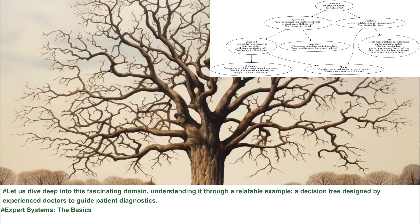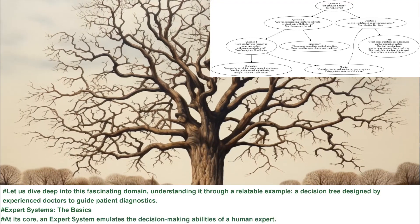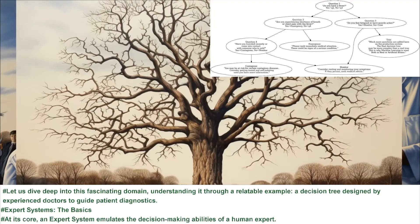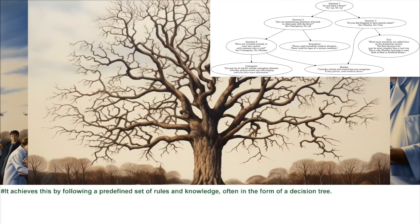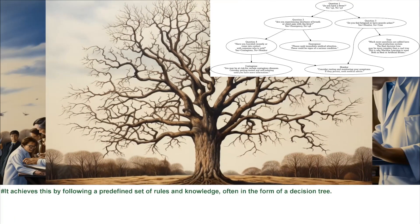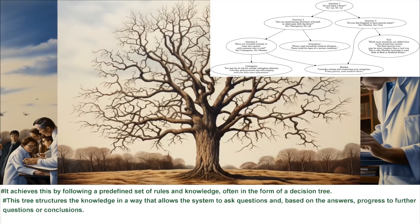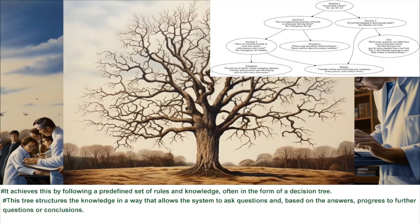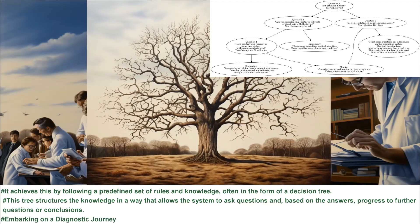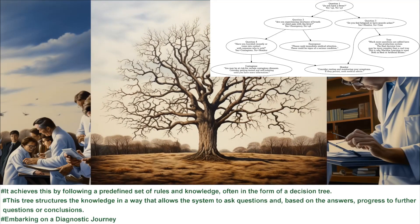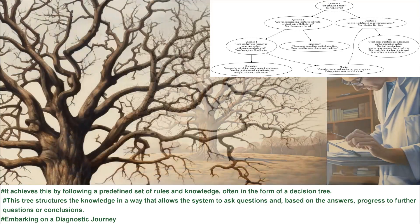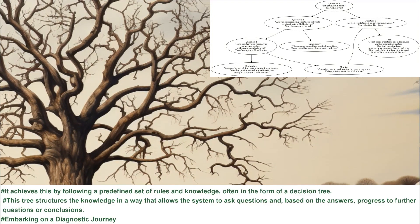Expert systems — the basics. At its core, an expert system emulates the decision-making abilities of a human expert. It achieves this by following a predefined set of rules and knowledge, often in the form of a decision tree. This tree structures knowledge in a way that allows the system to ask questions and, based on the answers, progress to further questions or conclusions.